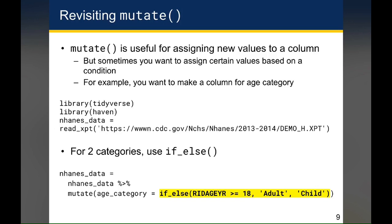If we wanted to create a column that contained the age category, where values of greater than or equal to 18 were coded as adult and values of less than 18 were coded as child, the way we would do that in mutate is combining the mutate function with the if-else function. So here we would say NHANES data equals NHANES data, then mutate age category equals if-else. The first argument is the condition, which is age is greater than or equal to 18. The second argument is what to do if the condition is true, and that's the value that will get assigned. The third argument is what to assign if the condition is false. So if the age is greater than or equal to 18, the value of the age category variable will be adult, and otherwise it'll be child.